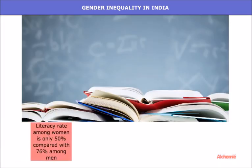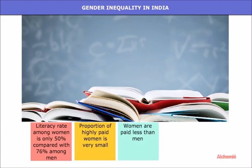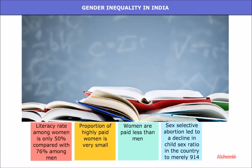Our country has a male-dominated patriarchal society where women face injustice. The literacy rate among women is only 50 percent compared with 76 percent of men. The proportion of highly paid women is very small, and women are paid less than men even when both do exactly the same work. Sex-selective abortion has led to a decline in the child sex ratio to merely 914.